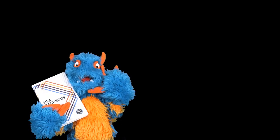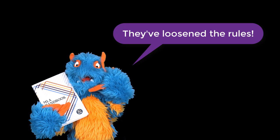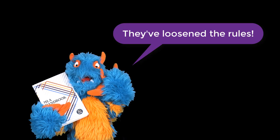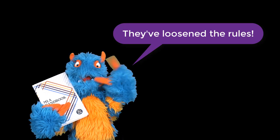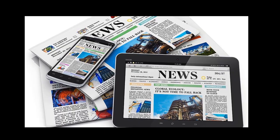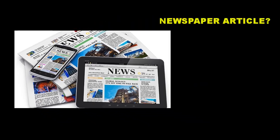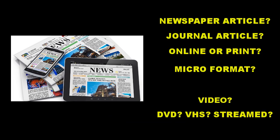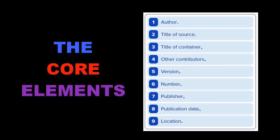MLA Handbook's 8th edition has deliberately loosened the rules to reflect the ever-changing way that works are published and consulted. There is now less emphasis on the work's publication format when creating citations. Instead, the writer creates an entry by consulting the MLA's list of core elements, which are assembled in a specific order. The MLA Style Centre provides a practice template to help with this, and we've linked this template below.